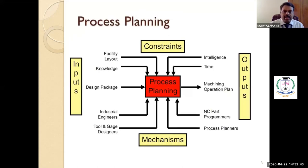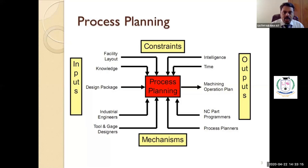If you consider the flow chart for process planning, the facility layout is the first and foremost important thing. The knowledge of process planning professionals, and then the design package — which may be computer-aided design data — in the form of selection of material, geometric dimensioning and tolerancing, and the required surface finish level. These data can be given as input for the process planning.